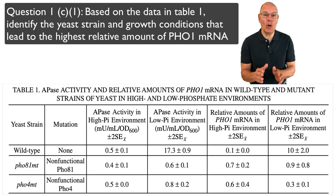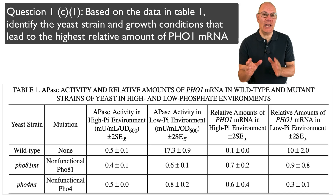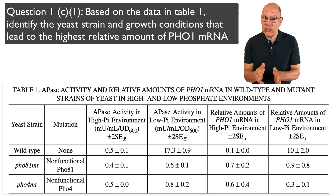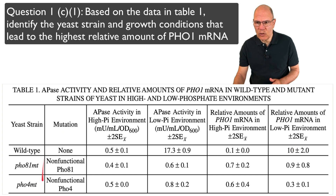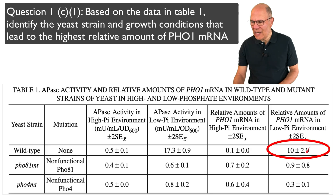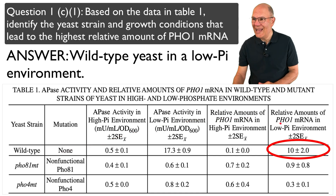Question 1c, Part 1: Identify the yeast strain and growth conditions that lead to the highest relative amount of FOX1 mRNA based on Table 1. The answer is wild type yeast in a low inorganic phosphate environment, where the value is 10.